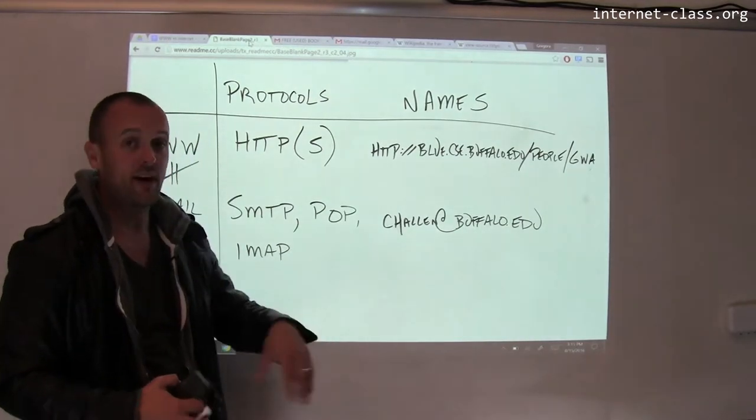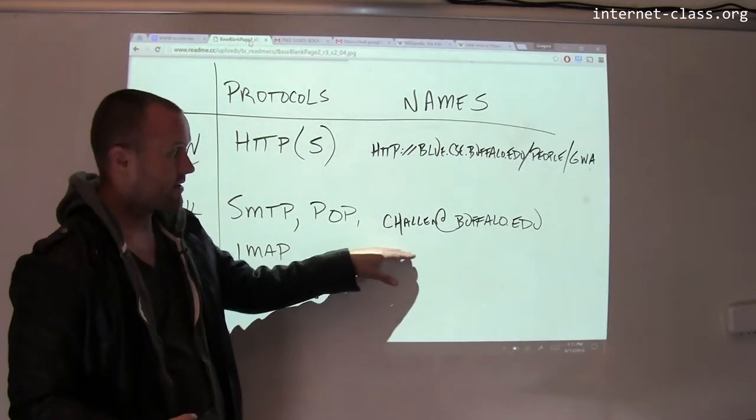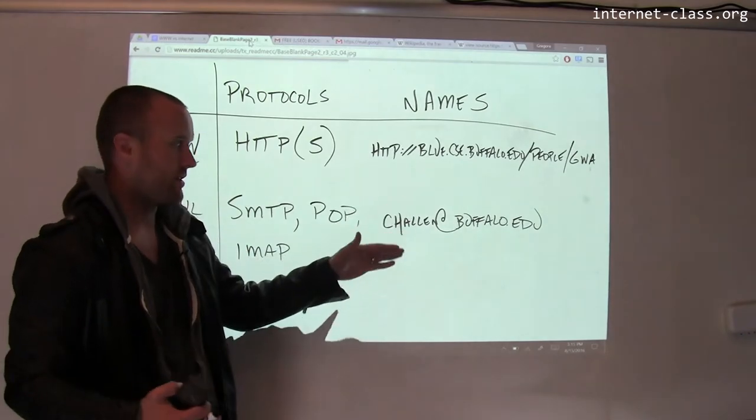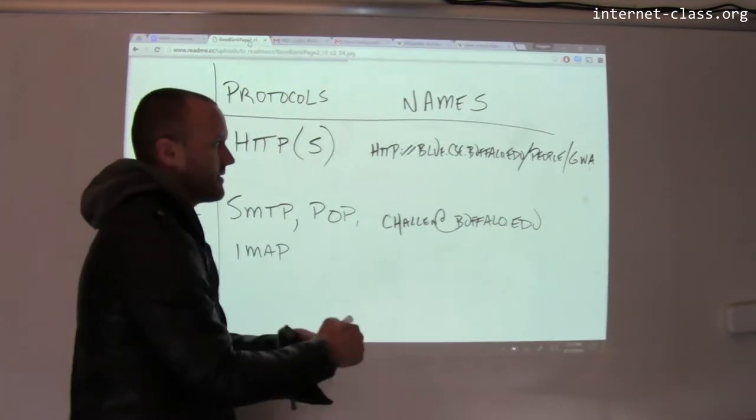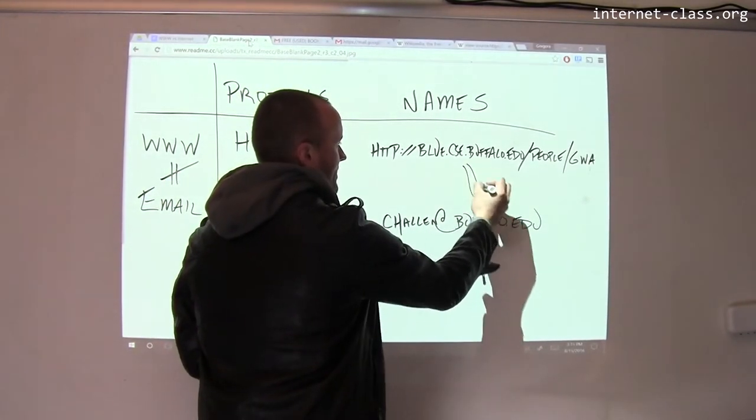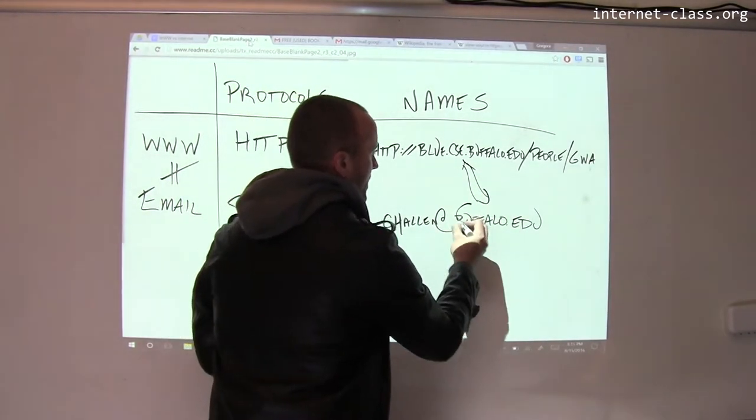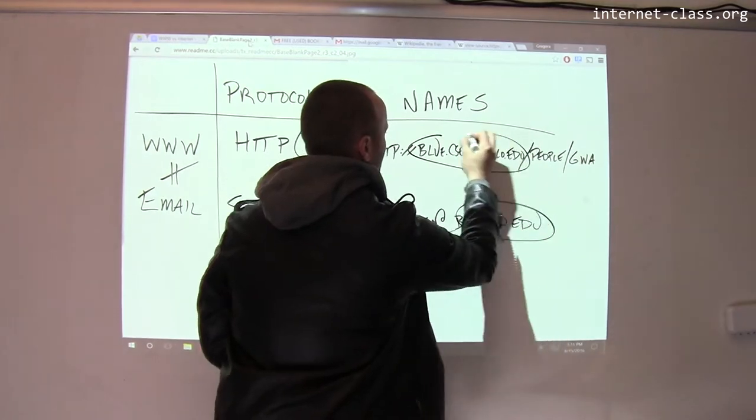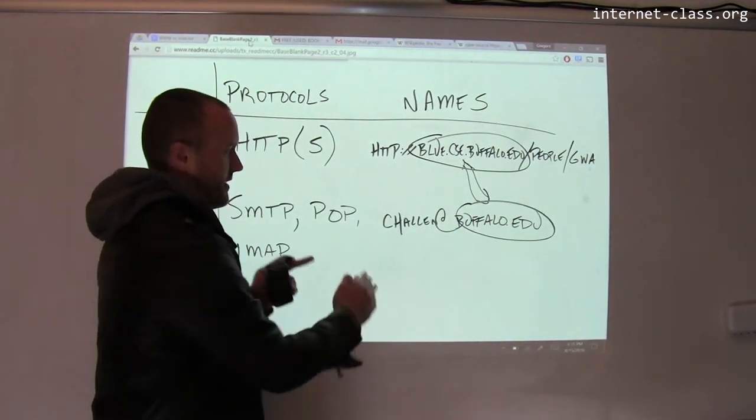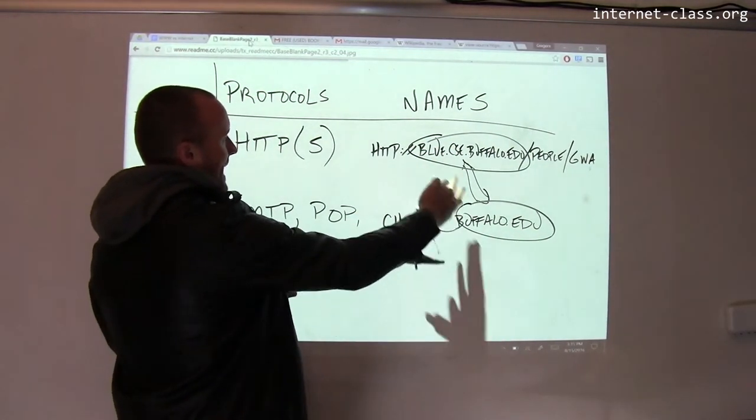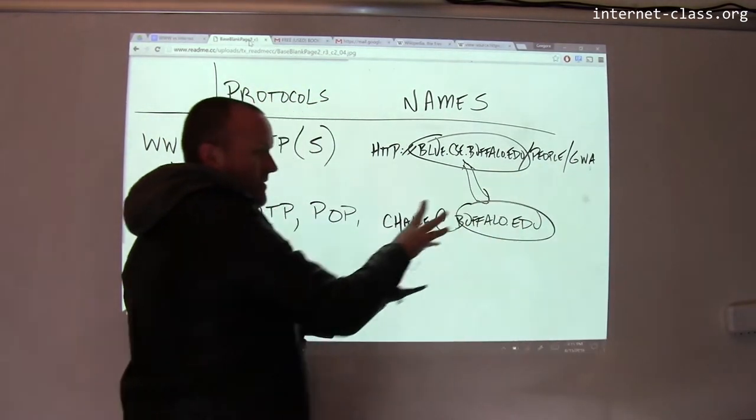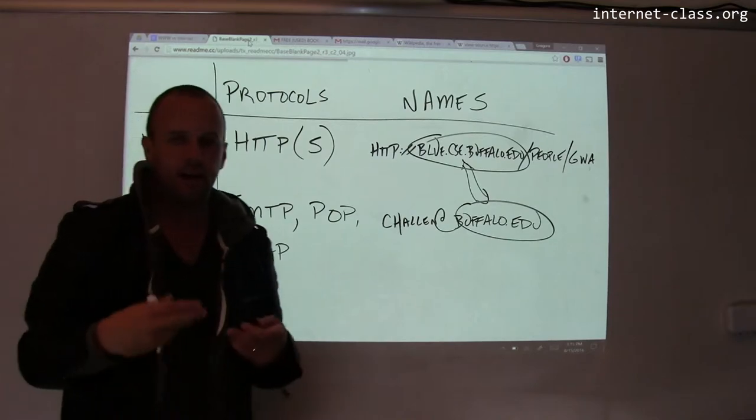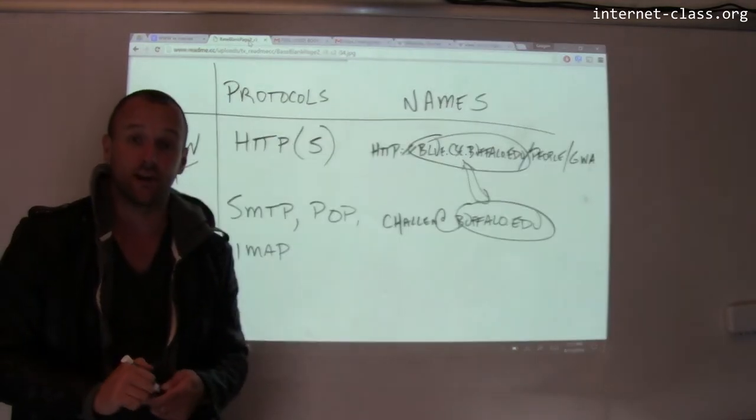In contrast, email defines its own set of names, and these are pretty iconic as well. This is my email address, challen at buffalo.edu. You can see that there's some similarities here. In particular, in both cases, there's a host name that's part of the name. But the rest of it is quite different. This part, the username at, really has no relationship to this. And email doesn't have the rest of the URL that identifies the web document that I'm actually trying to access.